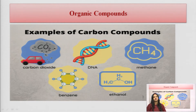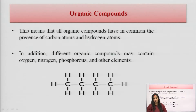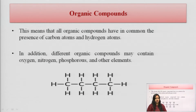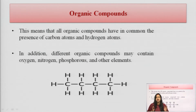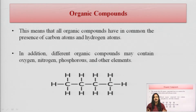Examples of carbon compounds include carbon dioxide, DNA, methane, benzene, and ethanol. However, carbon dioxide is not considered an organic compound, because in it the carbon atom is only attached with the oxygen atom and there is no hydrogen atom present. All organic compounds must have both carbon and hydrogen atoms — the bonding of carbon and hydrogen is necessary.